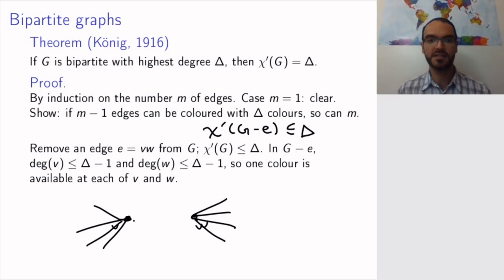If we're lucky, it's the same color that's available at v and w. Say v has no yellow edge coming into it, and w has no yellow edge coming into it—that's what it means for a color to be available. Then yellow is available at both vertices, and we can color this remaining edge yellow. But that's if we're lucky.